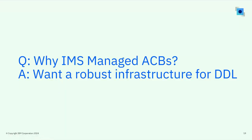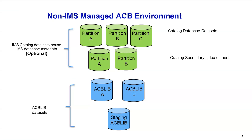So why IMS managed ACBs — what is it about this infrastructure that we need for DDL? IMS managed ACBs provides a robust infrastructure for DDL. In a non-IMS managed ACB environment, what you've got today is the catalog partition data sets — optionally implemented. There's one secondary index on the catalog you can partition. Then you've got ACB Live A and ACB Live B, and a staging ACB library. At any given point in time, either ACB Live A or ACB Live B is being used — one is active and one is inactive. This is a non-IMS managed ACB environment.